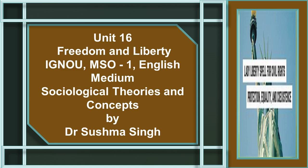Rousseau says that in the state of nature our freedom derives from our free will, our capacity to resist the desires which press us, together with our status as independent creatures, neither subject to the demands of others nor dependent on them to get what we want. As contractors, we shall be satisfied with nothing less than that social state which best approximates to this natural condition. Natural freedom is lost, but the thought of it gives us a moral benchmark by which we can appraise the institutions of contemporary society.